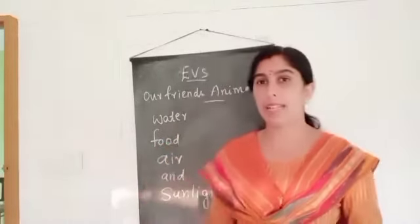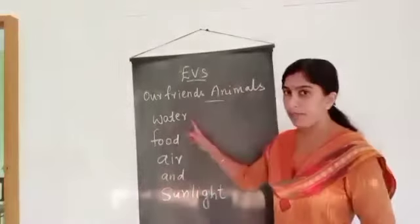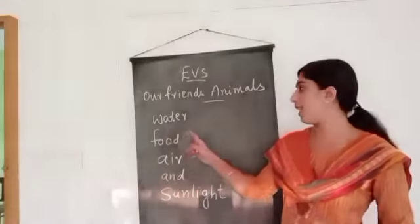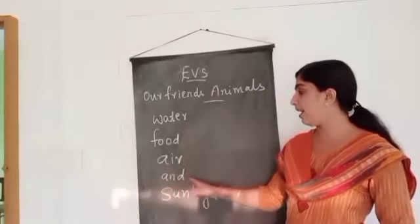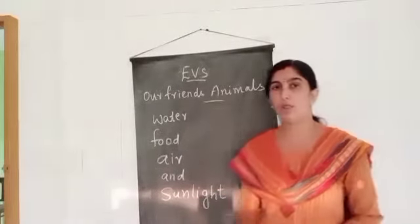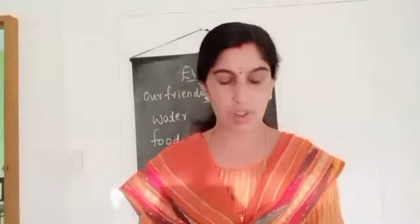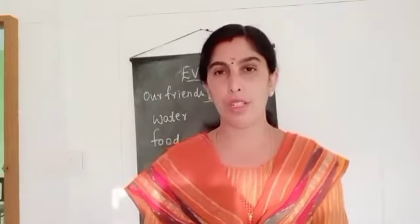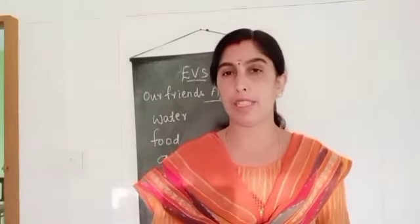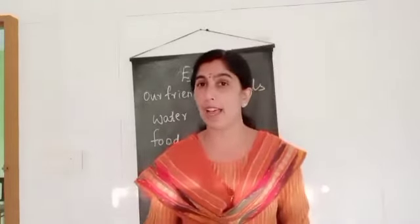All the animals need sunlight also. All living things need water, food, air, and sunlight. So, you can write — food is already given there. All the animals need food, so you can write three more things: air, water, and sunlight.